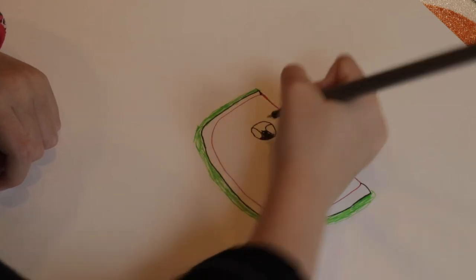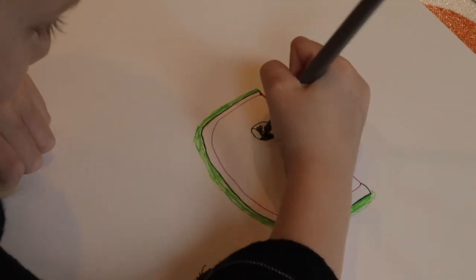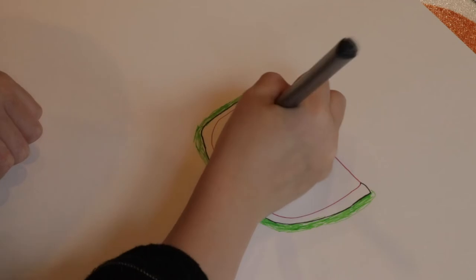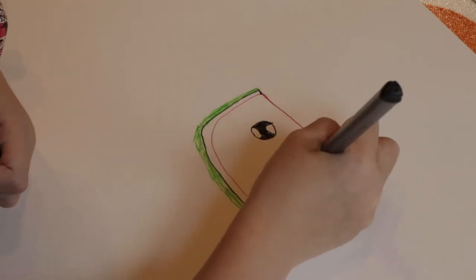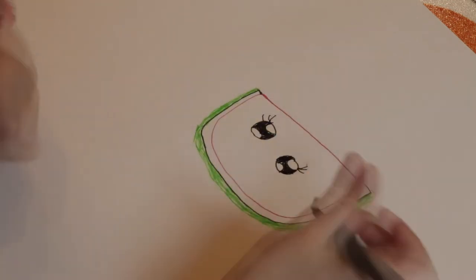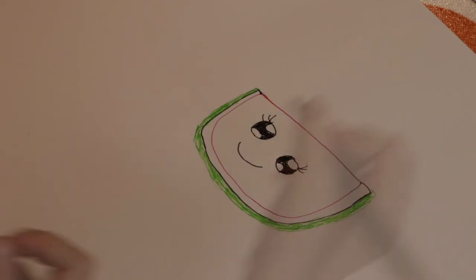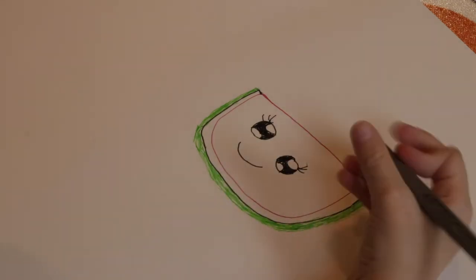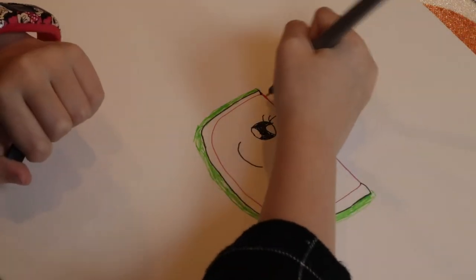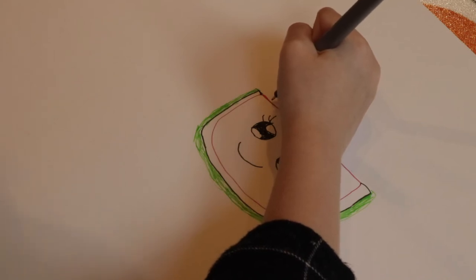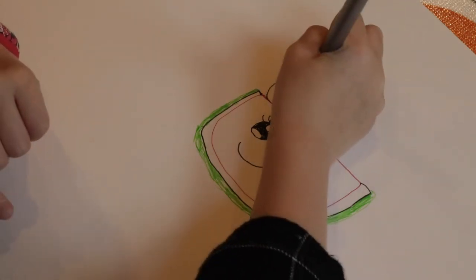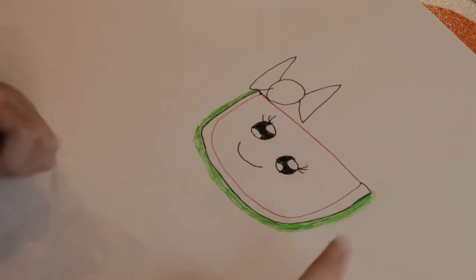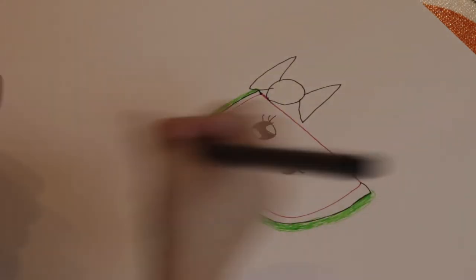You can just color it in like this. And I've drawn some eyelashes, and the last thing I'm going to draw is a bow. And then I'm going to draw little pips.